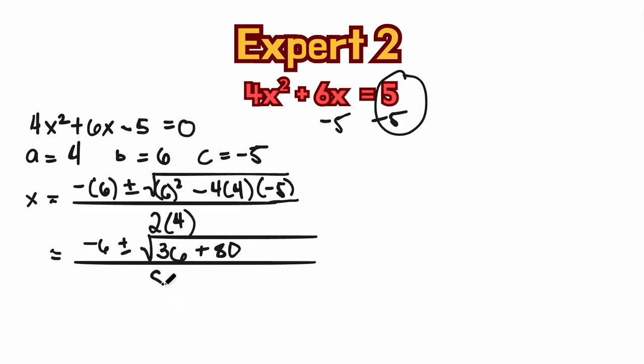2 times 4, that is 8. So we get to simplify this radicant number here. So we have negative 6 here, plus or minus 36 plus 80, that is going to be 116, all over 8.